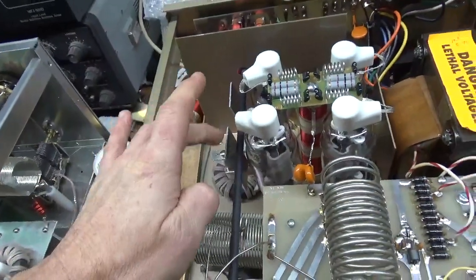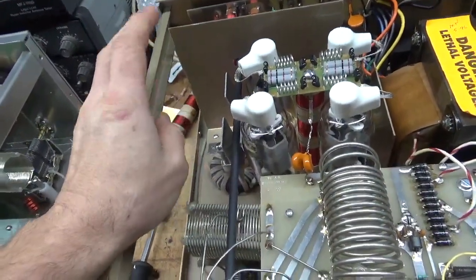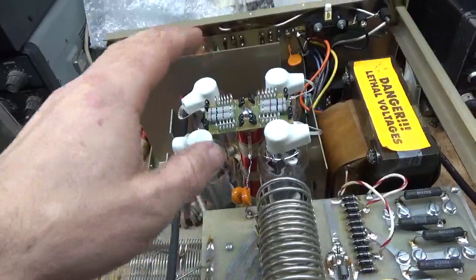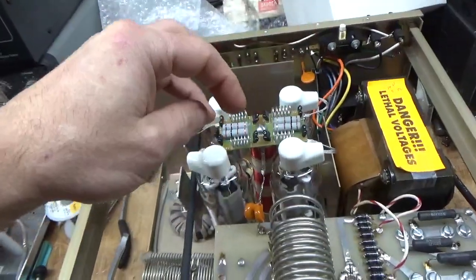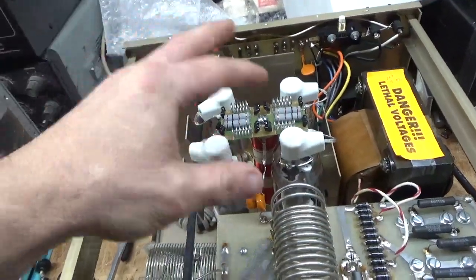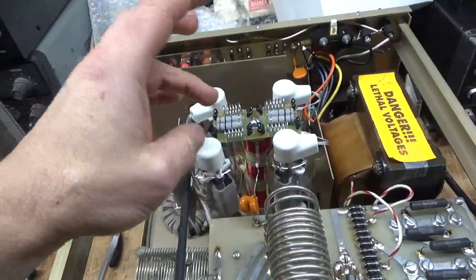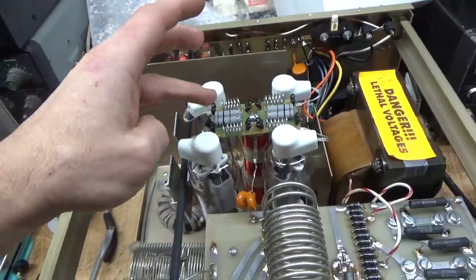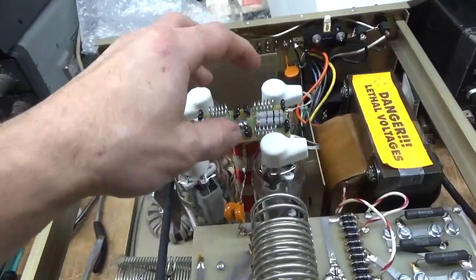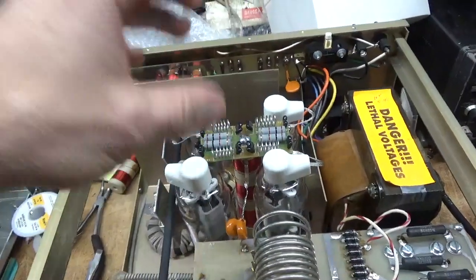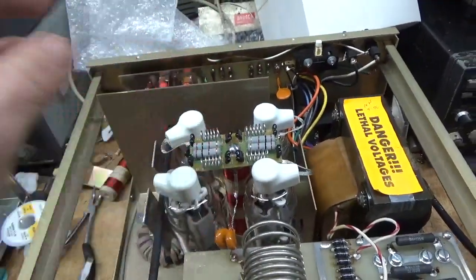Ended up replacing the neutralization bar here. Had the shorter style, put the newer one in. Had the older parasitic suppressor assembly. It had the coil with the resistor for each tube. I put this assembly in, so it has the current parasitic suppressor assembly.